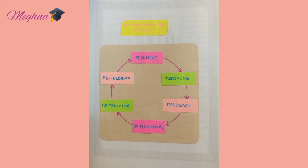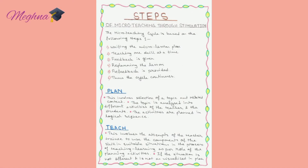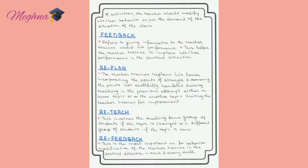The micro teaching cycle has six steps. The first step is planning, where the teacher trainee prepares a lesson plan and plans a logical sequence of classroom activities. The second step is teaching, which involves the teacher trainee using components of learning skills in suitable situations during the teaching-learning process. The third step is feedback, where peers or an expert gives constructive feedback on her performance to help her improve in the desired direction.